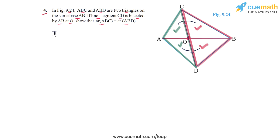In triangle ACD, AO is a median, so it will divide the area into two equal parts.